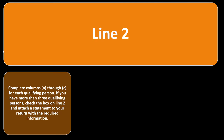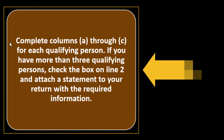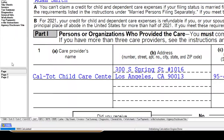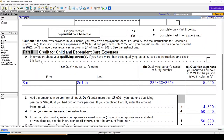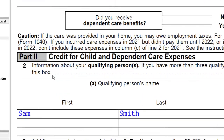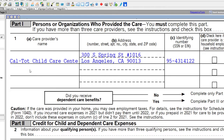We're now looking at line 2 of Form 2441. Complete columns A through C for each qualifying person. If you have more than three qualifying persons, check the box on line 2 and attach a statement. We're focusing on Part 2 — the credit for child and dependent care expenses — where information about who we paid is entered in Part 1.